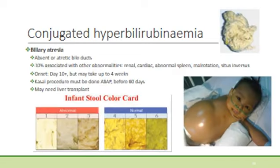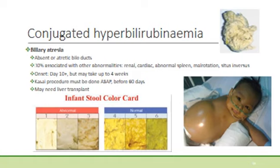One condition that should not be missed is biliary atresia, where there are absent or atretic bile ducts. In 30%, there may be other associated abnormalities, specifically in the renal and cardiac systems. There may be an abnormal spleen, malrotation of the gut, or situs inversus. The onset of conjugated hyperbilirubinaemia typically starts around 10 days but may take up to four weeks. The Kasai procedure must be done as soon as possible, preferably before 60 days, as this condition leads to irreversible liver cirrhosis — and the babies may then need a liver transplant. It is important to enquire regarding the colour of the stool; if no bile is reaching the gut, the stools will have a white pasty colour.